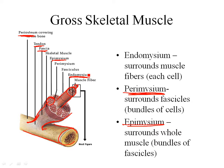A group of muscle cells together makes a fascicle or fasciculus, and each fasciculus is surrounded by perimysium — peri meaning around. Then a bunch of fasciculi together make a muscle. All of those fasciculi are surrounded by the outer connective tissue covering known as epimysium.